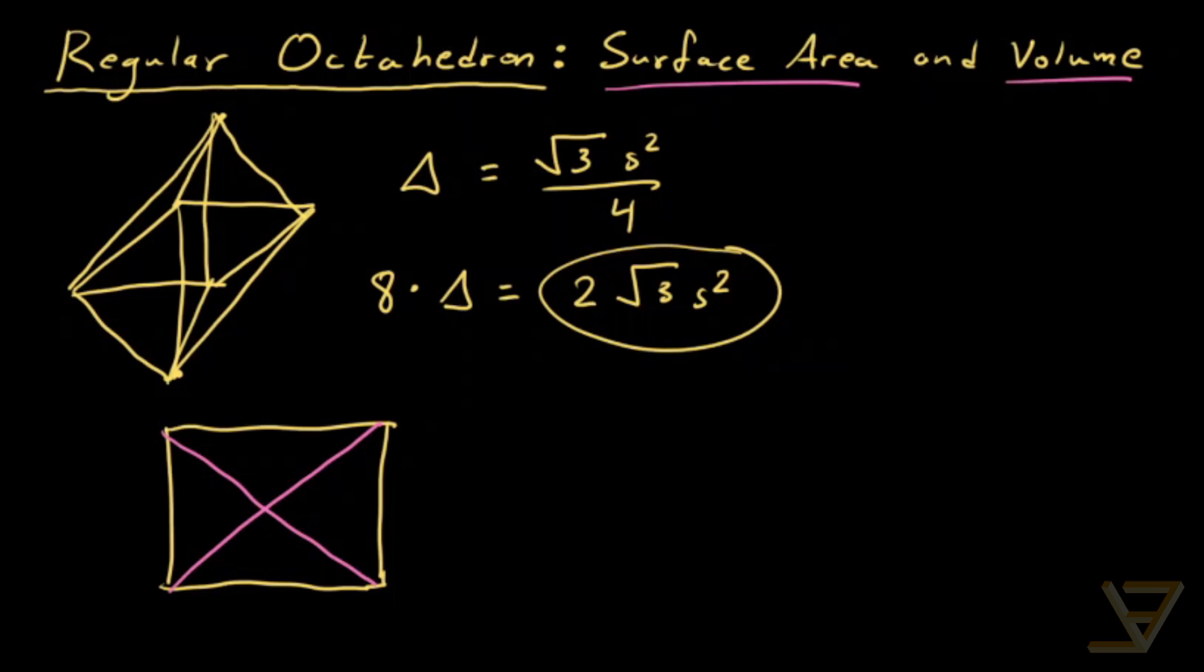What we know is that by the Pythagorean theorem, if the side lengths are s, then the diagonals have length square root of s squared plus s squared, which is equal to square root of two s. And so half the diagonal would be that over two, which is square root of two s over two.